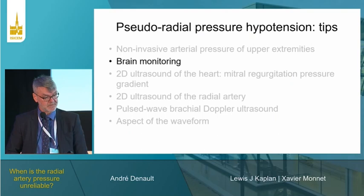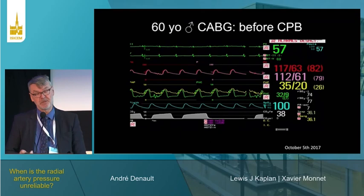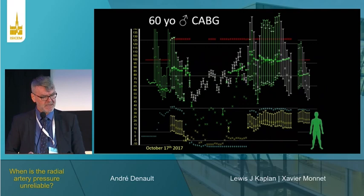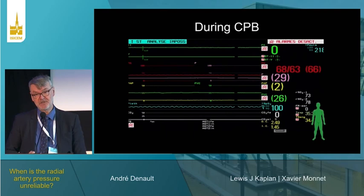Another technique is brain monitoring. In a patient with a very reduced radial artery pressure — a 60-year-old before bypass — there is no difference between radial and femoral, and brain saturation is normal. During bypass, you can see a huge difference between radial and femoral artery pressure. During bypass, if you had only the radial, the pressure was 29 mmHg, while the femoral was much higher. A clue is that your brain saturation is completely normal — if the brain saturation is very low, something is wrong.